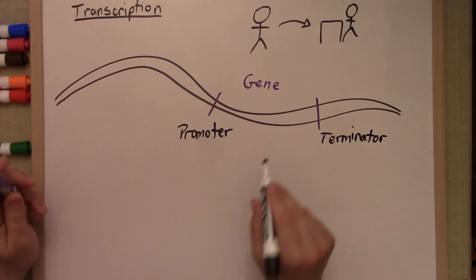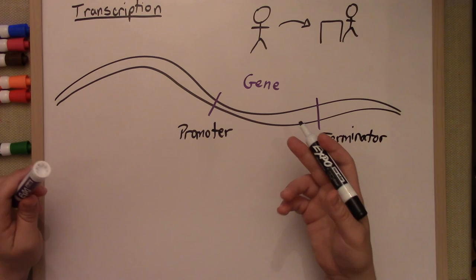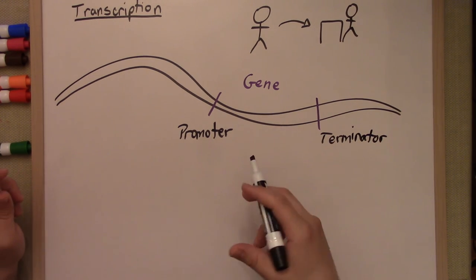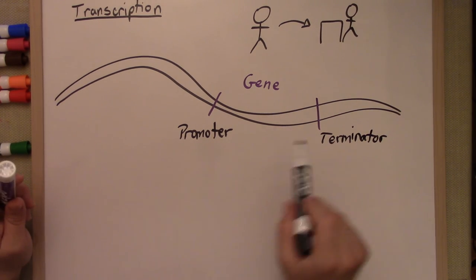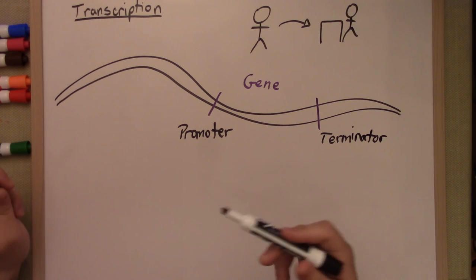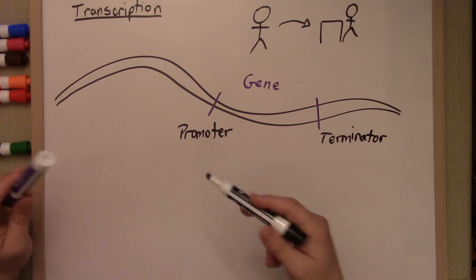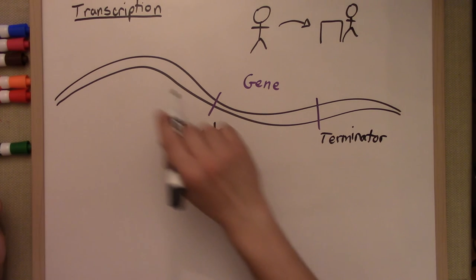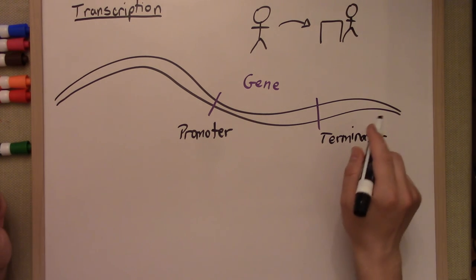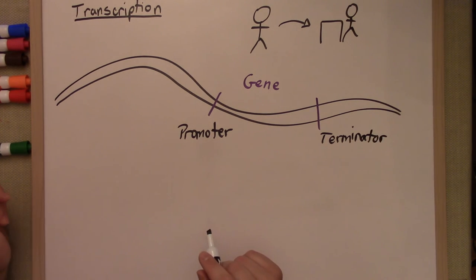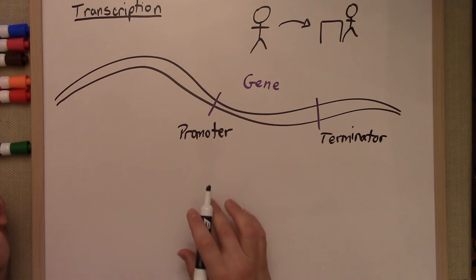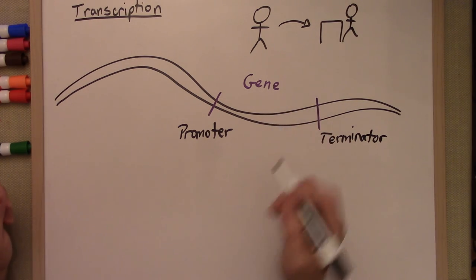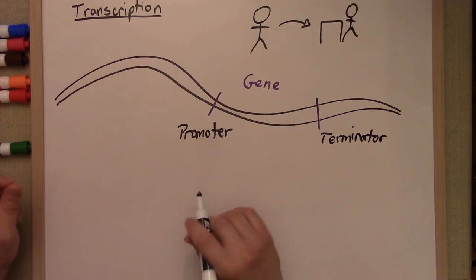These are the signals in DNA that are going to attract a bunch of different proteins. The proteins are going to congregate around the promoter and terminator and they're going to tell other proteins to turn on and to turn off. When we're looking at our double-stranded piece of DNA, it's important to know the direction that we're working with — to know which of these two strands is going to be worked on during transcription.